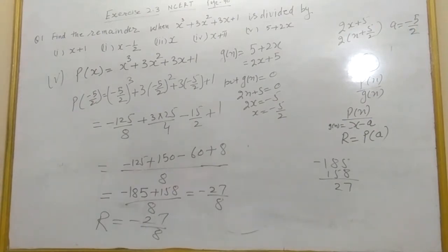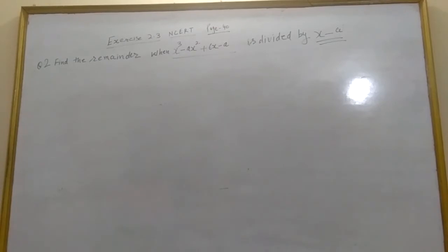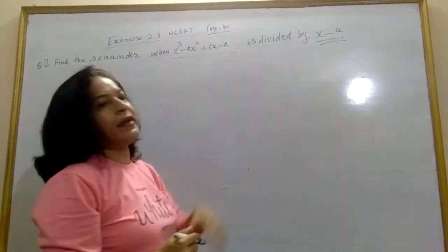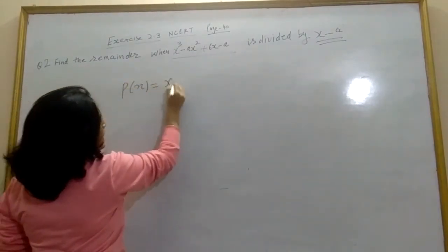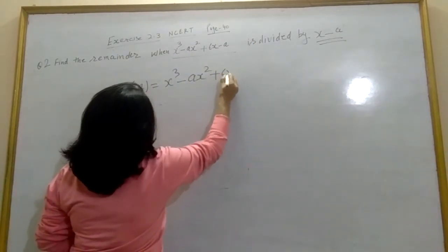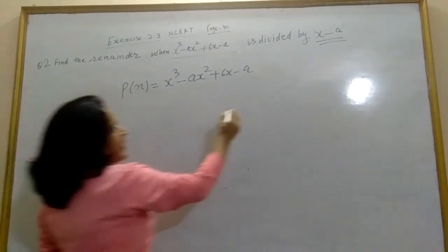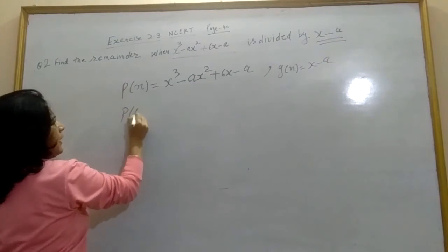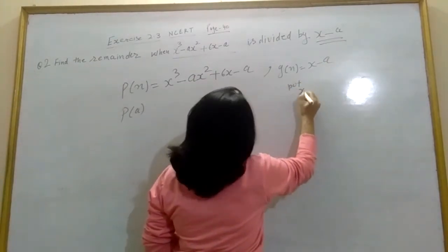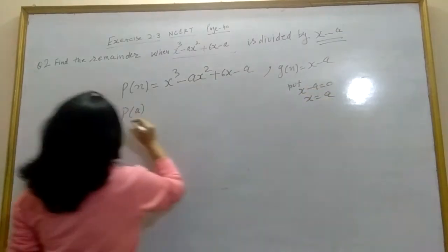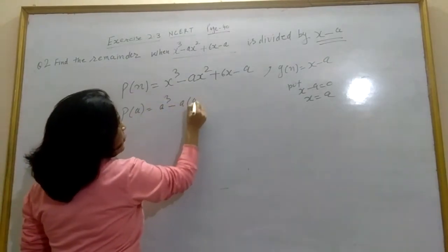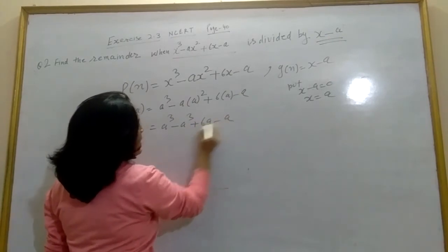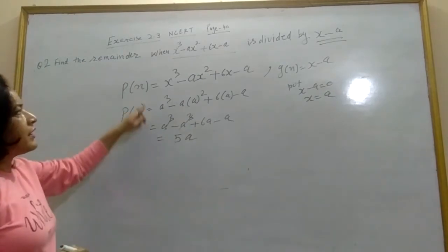Question 2: Find the remainder when x³ − ax² + 6x − a is divided by x − a. Here p(x) = x³ − ax² + 6x − a and g(x) = x − a. Setting x − a = 0 gives x = a. So p(a) = a³ − a·a² + 6a − a = a³ − a³ + 6a − a = 5a. The remainder is 5a.